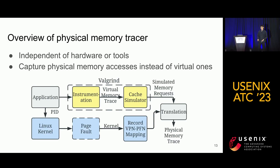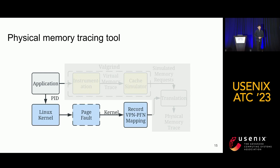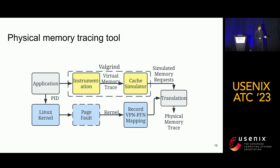We created a physical memory tracer that is independent of any specific hardware tools and can successfully capture the physical memory accesses between the last-level cache and main memory. We utilize Valgrind to capture load and store instructions and use its cache simulator to extract last-level cache misses as our memory trace. However, these memory traces are still in virtual form, so we modified the Linux kernel to store page table information in the proc filesystem on page-fault events. With the page table information and the virtual memory access patterns, we combine the two to get physical memory traces for an application.